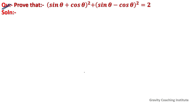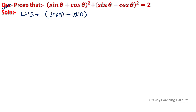Question: prove that (sin θ + cos θ)² + (sin θ - cos θ)² = 2. So here, LHS is equal to (sin θ + cos θ)² + (sin θ - cos θ)².